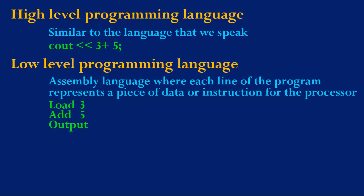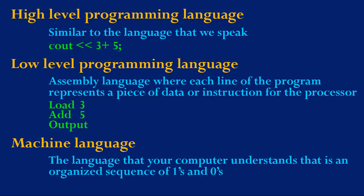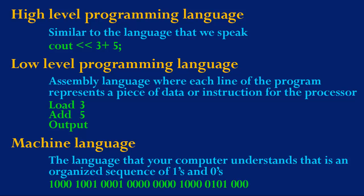A third type of language is machine language, and this language is the language that your computer understands — that is, an organized sequence of ones and zeros. As you already know, C++ is a high-level programming language, and the goal here is to get this high-level programming language into machine language. So the process of doing that is what we are now going to consider.